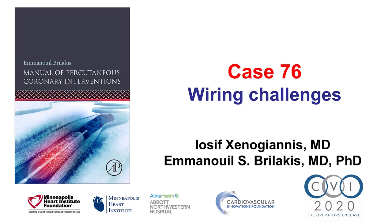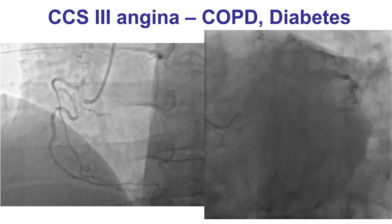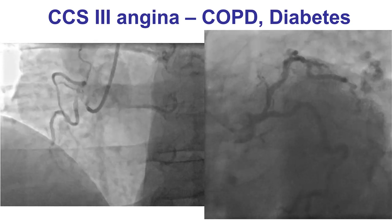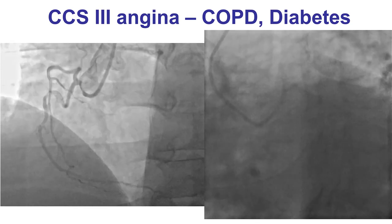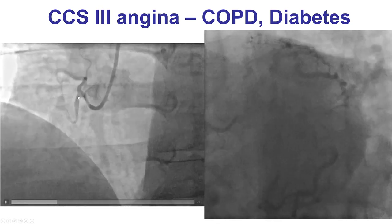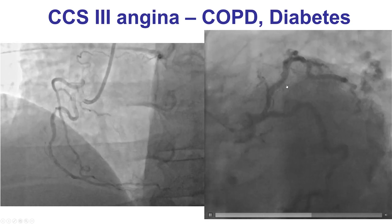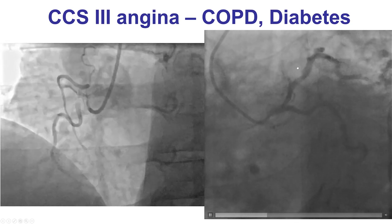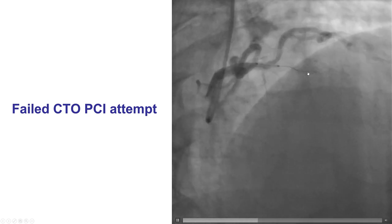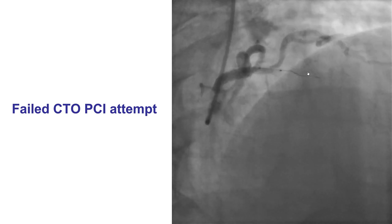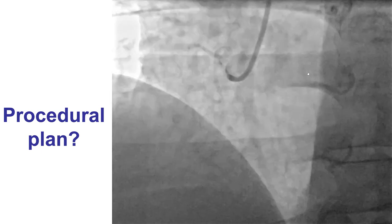This case illustrates challenges with wiring a tortuous right coronary artery. The patient was a 60-year-old gentleman who presented with Class 3 angina and was found to have inferior ischemia on a nuclear stress test. He also had COPD and diabetes. His angiogram showed a significant lesion in the mid-right coronary artery and a CTO of the mid-LAD after the take-off of a large diagonal branch. There was a brief attempt for recanalizing the LAD CTO by a different operator. The patient was subsequently referred to us for recanalizing the native right coronary artery after he declined coronary bypass graft surgery.